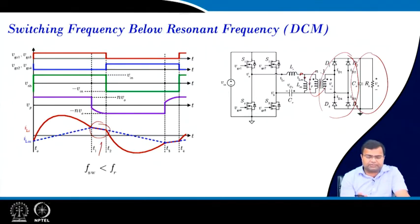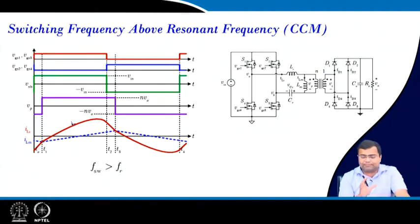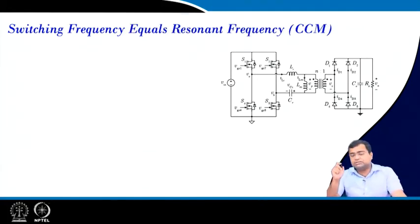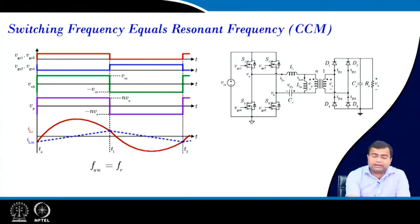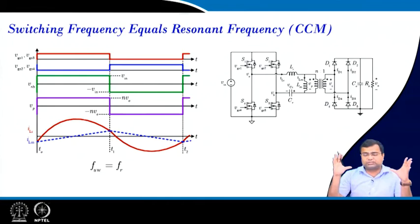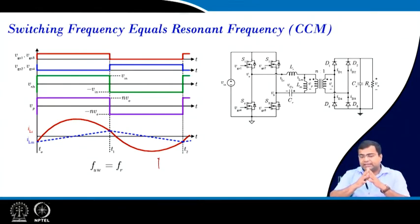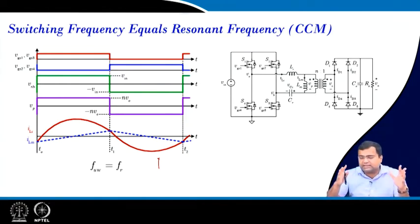Both below-resonant and above-resonant operation produce distorted (non-sinusoidal) waveforms in the resonant tank with harmonic content. However, if the switching frequency equals the resonant frequency, the tank waveform looks nearly like a pure sine wave, minimizing harmonic content and enabling very high efficiency. Maintaining this condition is somewhat difficult and may require an additional degree of freedom.